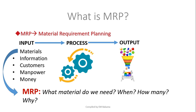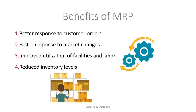MRP is about planning for material only — not information, customers, manpower, or money. It's important because material is the transformed resource that enables production. Without knowing what materials you need and how many, you can't run production. The benefits of MRP include better response to customer orders, faster response to market changes, improved facility and labor utilization, and reduced inventory levels.